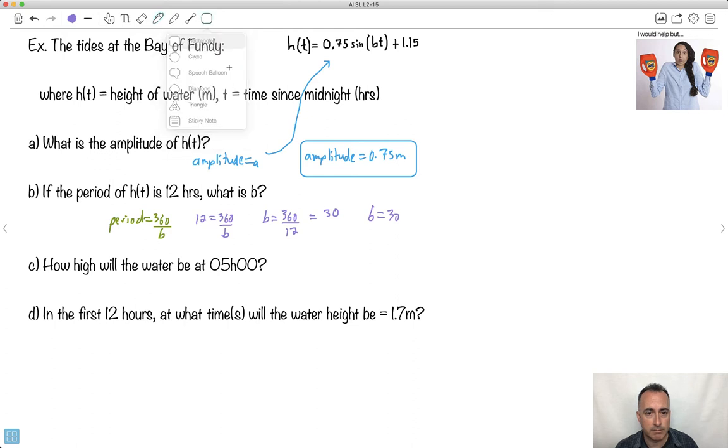So now I know that B equals 30. That means now I can rewrite my equation. So h(t) equals 0.75 times the sine of 30t plus 1.15. This is going to be the key to doing the rest of it. This is my equation now.